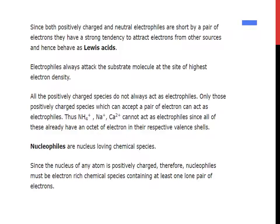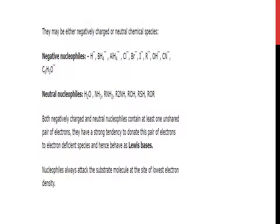Nucleophiles are nucleus-loving chemical species. Since the nucleus of any atom is positively charged, nucleophiles must be electron-rich chemical species containing at least one lone pair of electrons. They may be either negatively charged or neutral. Negative nucleophiles include: H⁻, BH4⁻, AlH4⁻, Cl⁻, Br⁻, etc. Neutral nucleophiles include: H2O, NH3, RNH2, etc. Both negatively charged and neutral nucleophiles contain at least one unshared pair of electrons and are called Lewis bases. Nucleophiles always attack the substrate molecule at the site of lowest electron density.